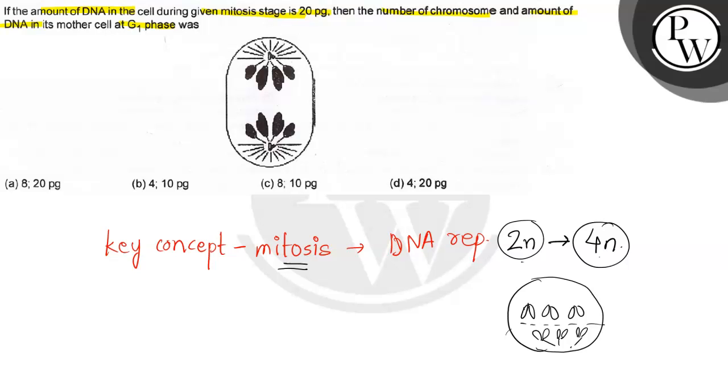This stage is anaphase, actually, when chromosome separation and segregation to opposite poles occurs. But until these two cells divide...